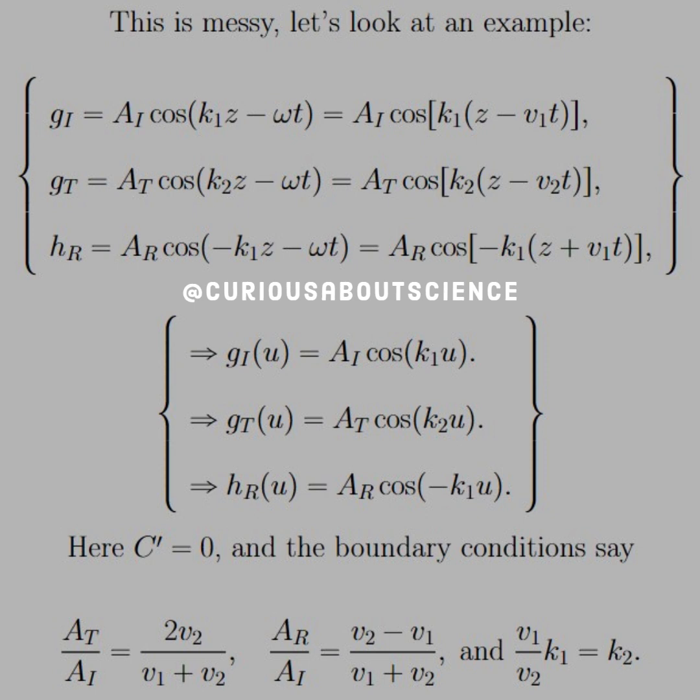And the boundary conditions say that the ratio of A_T over A_I is equal to 2 v_2 over v_1 plus v_2, and A_R over A_I is equal to v_2 minus v_1 over their sum, with v_1 over v_2 k_1 equal k_2.